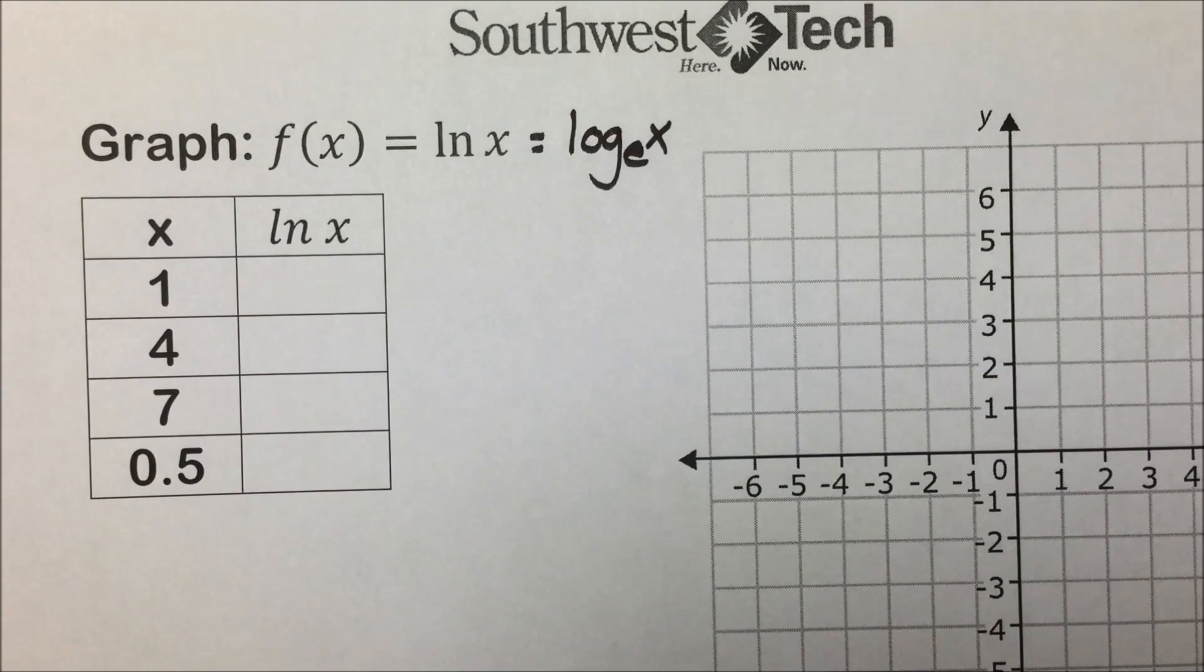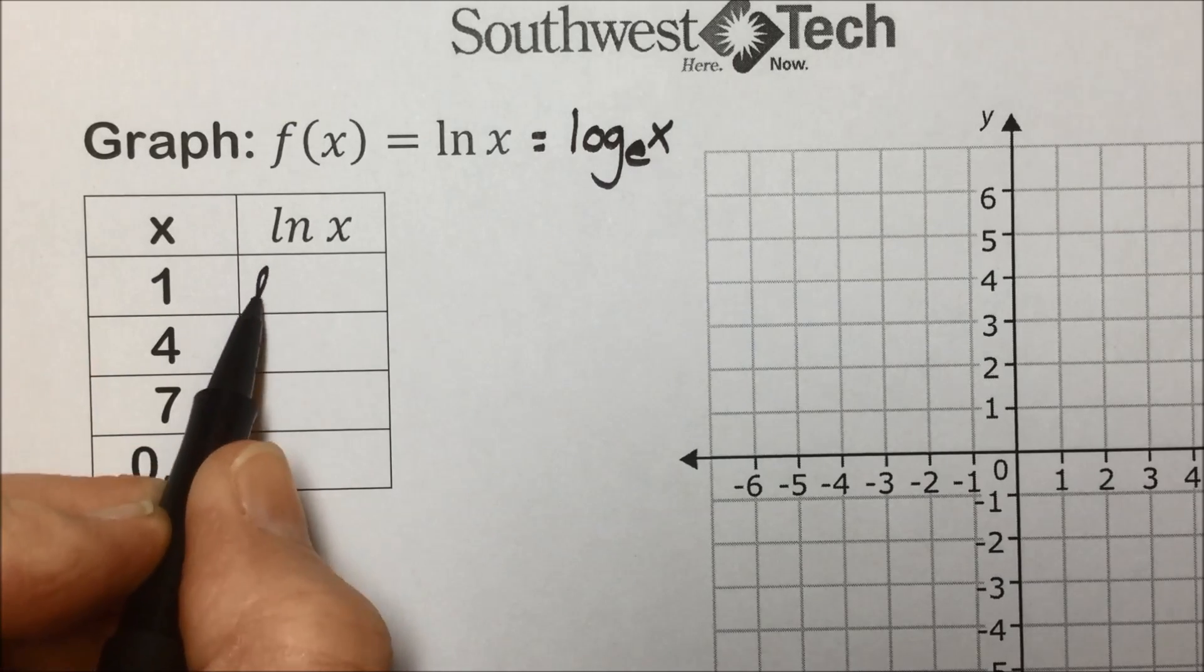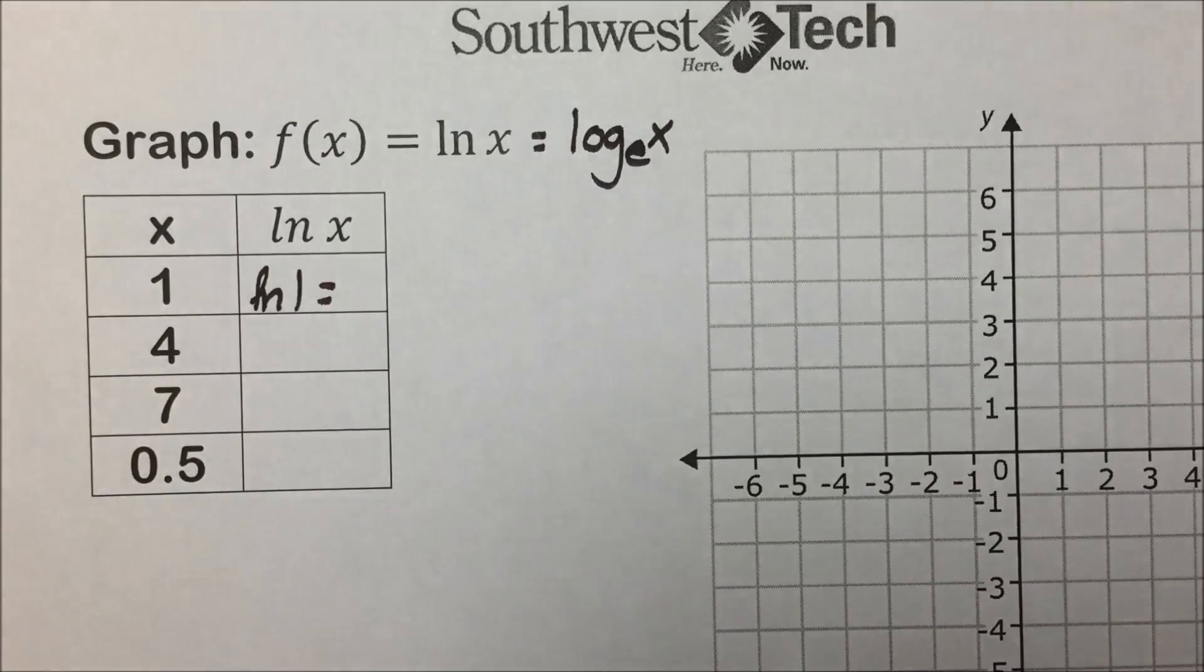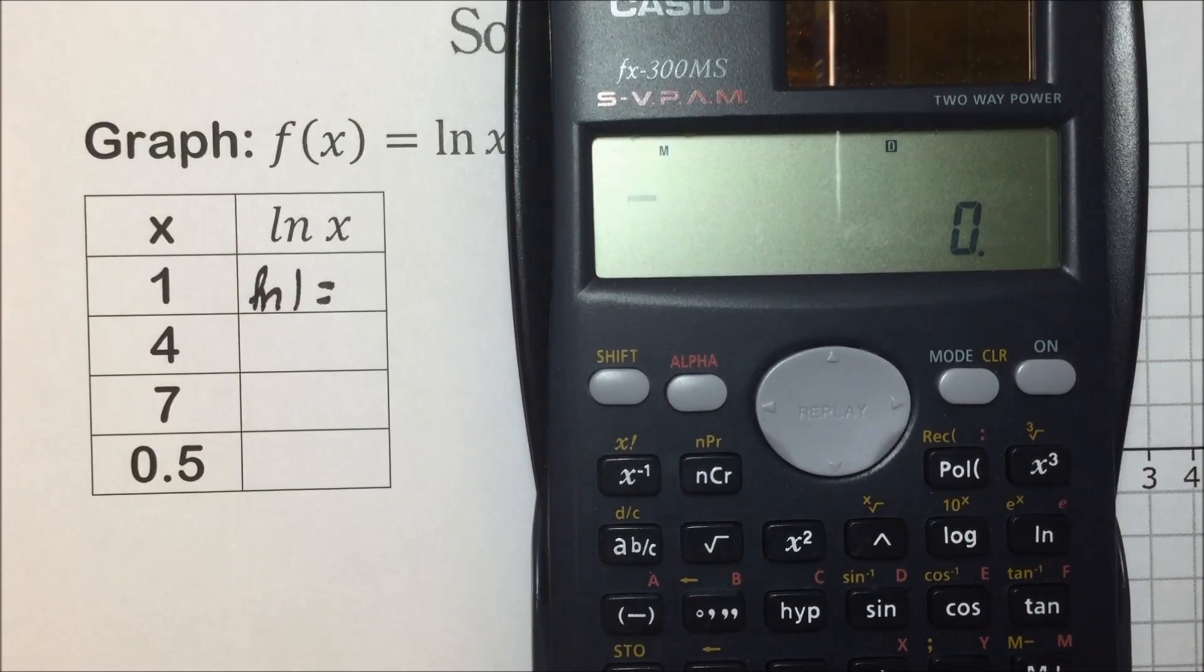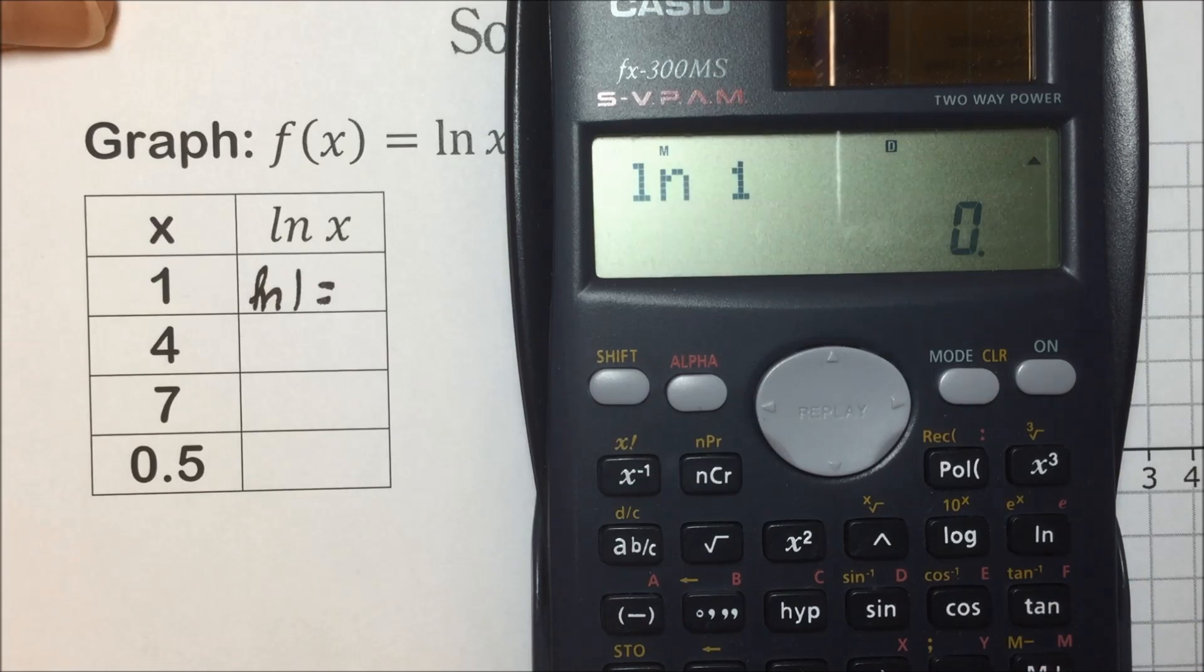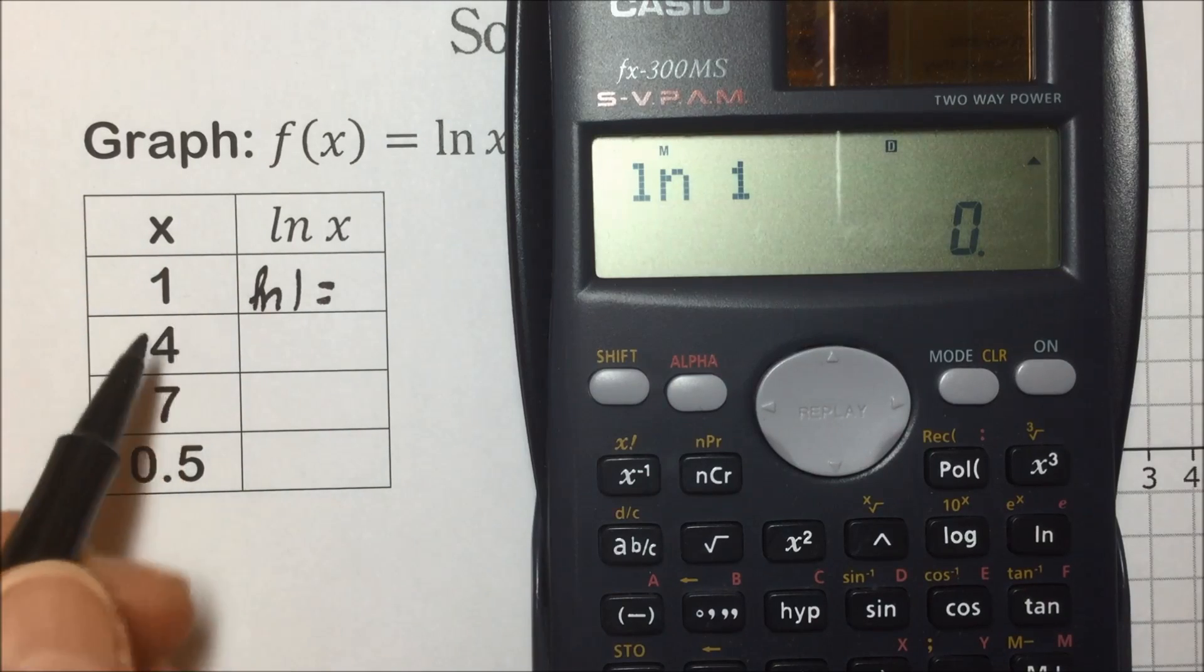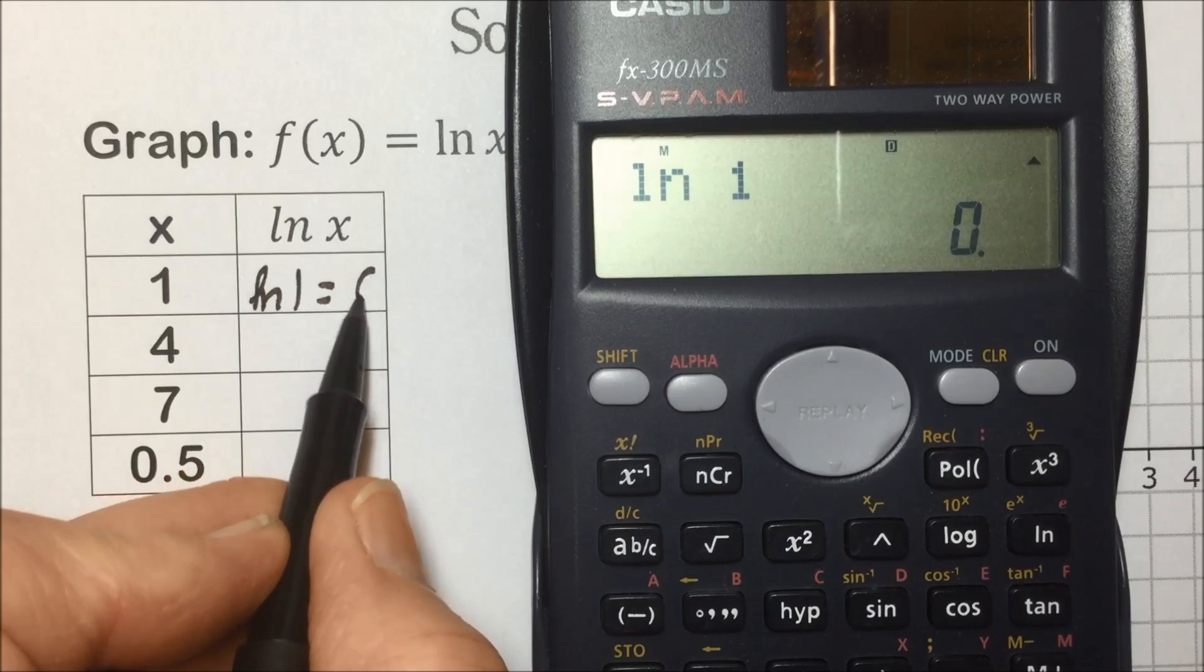So a couple test values here, we'll find some solutions using a calculator. The first one is the ln of letting x equal 1. So if we take the ln of 1 using our calculators, you may know this value from previous experience with logarithms, but to show using the calculator I'll tap the natural log key, put the 1 in, and the result is 0.